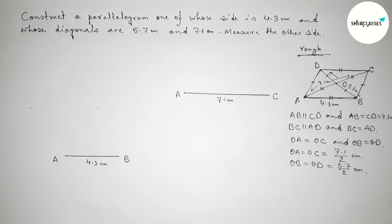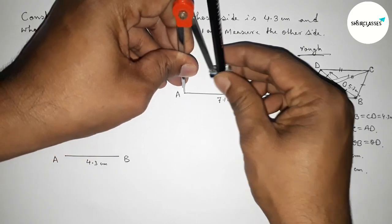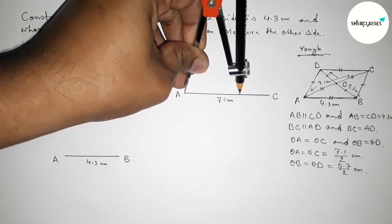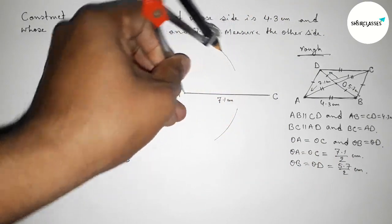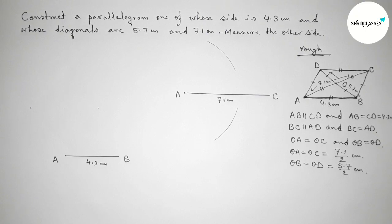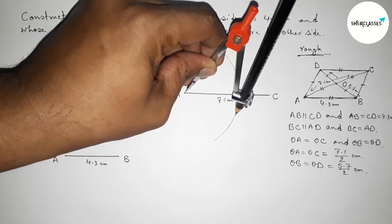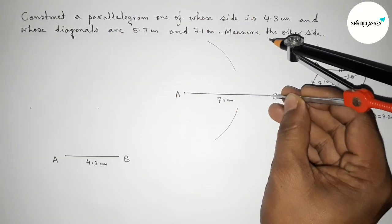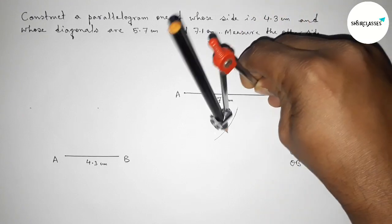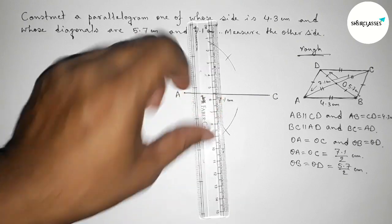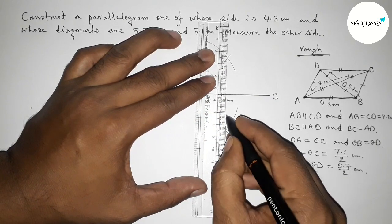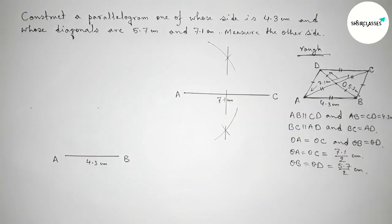Now we have to bisect this line with the help of a compass. Putting the compass here and taking greater than half of AC, drawing an arc here and drawing another arc here with the same length. Then putting the compass on point C, cutting arcs above and below. Now joining this line which bisects AC.